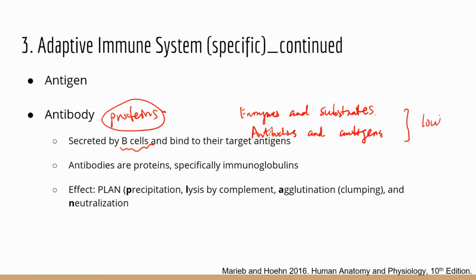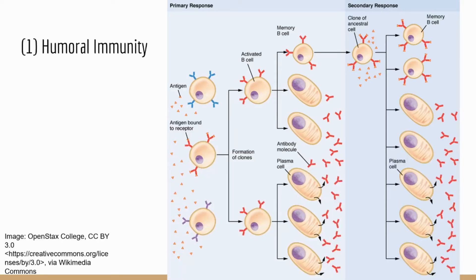Antibodies and antigens have a lock-and-key relationship — antibodies can recognize their target antigens, bind to them, and this leads to processes that can neutralize or destroy the antigens. This diagram shows how antibody is produced in humoral immunity. We can see antigens — let's say these are some bacterial cells — and they are bound to receptors on the surface of B cells.